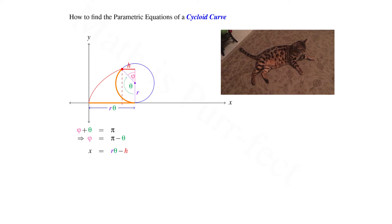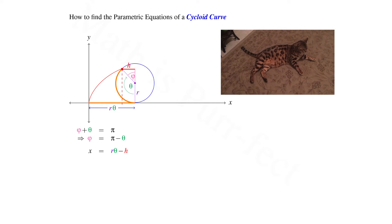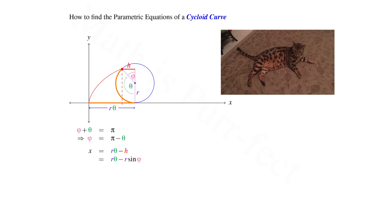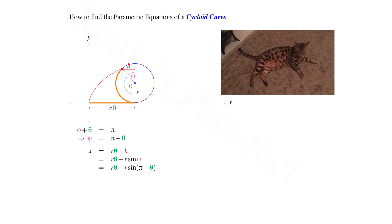We know that our x-coordinate will be h less than the arc length, r theta. Using triangle trigonometry, we note that h is equivalent to r sine phi, where phi was found to be pi minus theta.